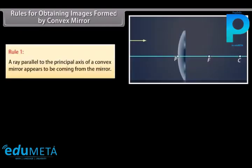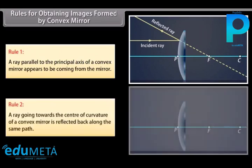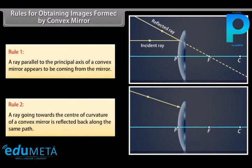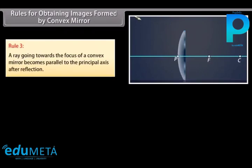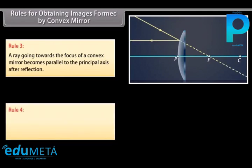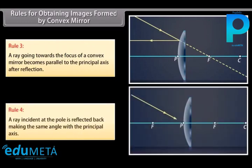Rules for obtaining images formed by convex mirrors. Rule 1: a ray parallel to the principal axis of a convex mirror appears to be coming from the focus behind the mirror. Rule 2: a ray going towards the center of curvature of a convex mirror is reflected back along the same path. Rule 3: a ray going towards the focus of a convex mirror becomes parallel to the principal axis after reflection. Rule 4: a ray incident at the pole is reflected back making the same angle with the principal axis.